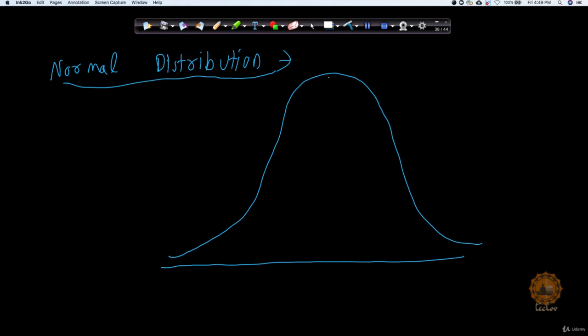Now if the data is split like this, it has a very interesting property. Let's say this value is mu, which is the mean. Then if I go on the left-hand side to the value of mu minus sigma, where sigma is the standard deviation for this data, and similarly if I go on the right-hand side towards mu plus sigma.